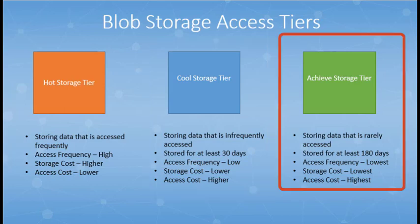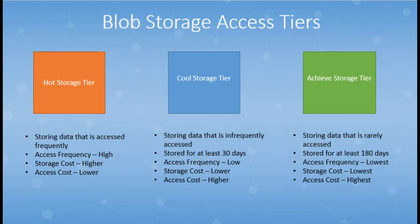The archive access tier is available only for individual block blobs. The archive tier is optimized for data that can tolerate several hours of retrieval latency and will remain in the archive tier for at least 180 days. One thing to note here is that changing the access tiers, from hot to cool for example, will incur charges.